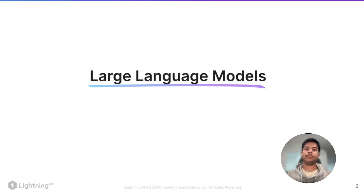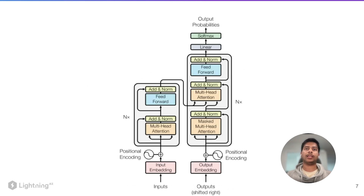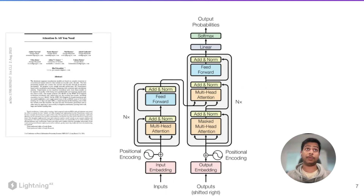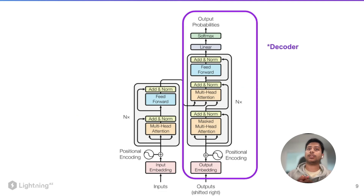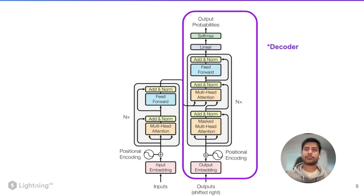Let me give you a brief introduction to large language models. Most of you might already recognize this diagram — it's from the 'Attention Is All You Need' paper. This whole diagram is called an encoder-decoder network. The left part is the encoder; a typical example of an encoder-based model is BERT, used for sequence classification tasks. The right side is called the decoder — all the latest large language models like LLAMA and Mistral are decoder-based models.